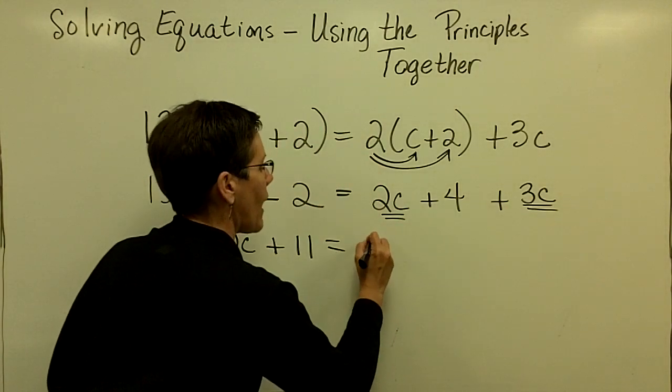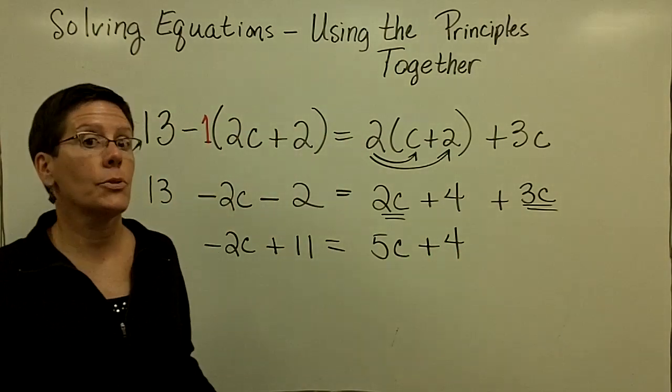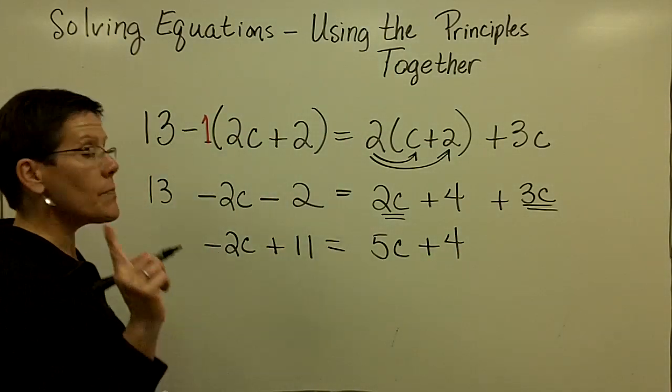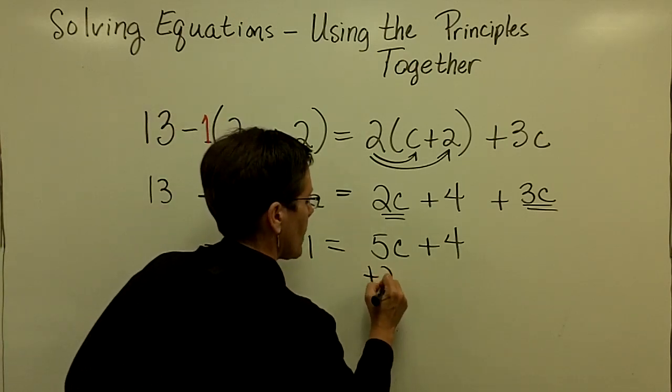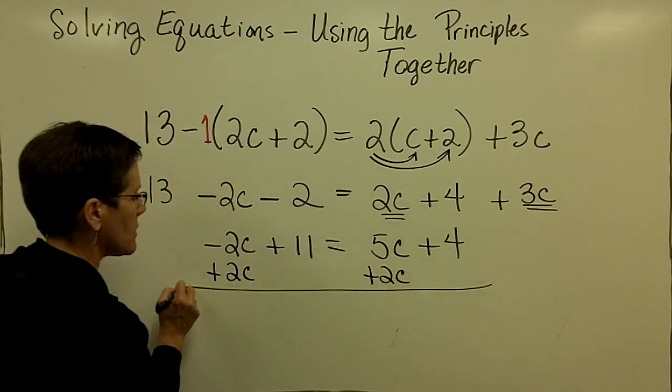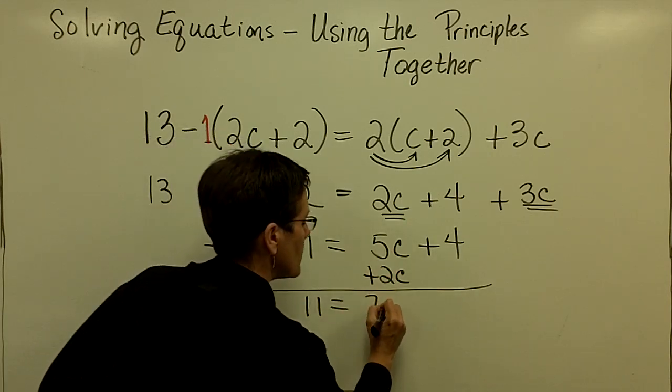Again, like terms, they add to be 5c. And I'm ready to use the addition principle a couple of times. I'm going to choose to add 2c to both sides. I'm going to have a little bit of space limitations here. And 5 and 2 is 7c.